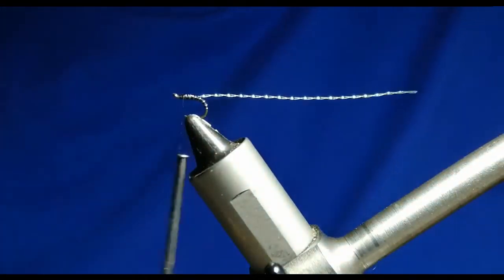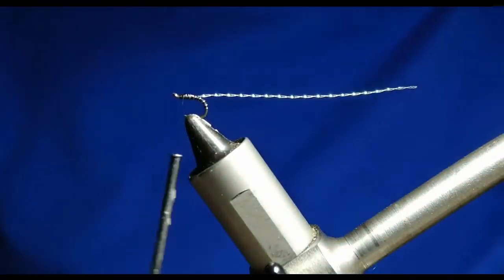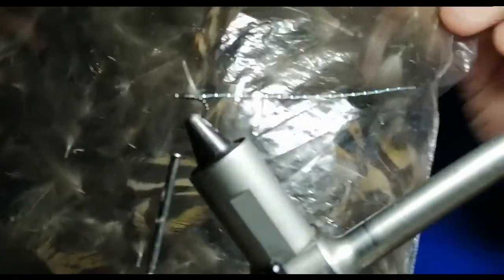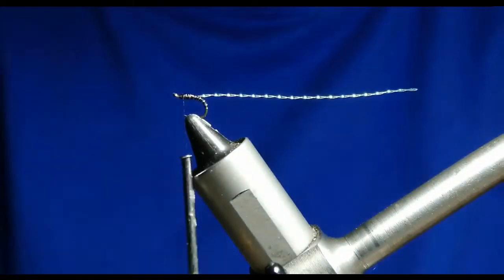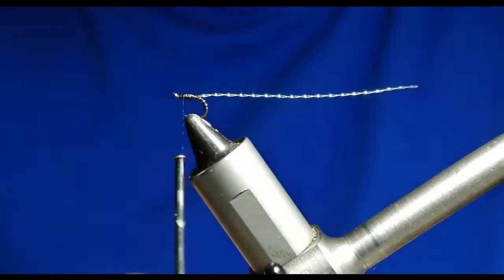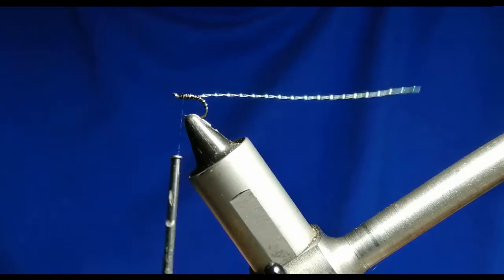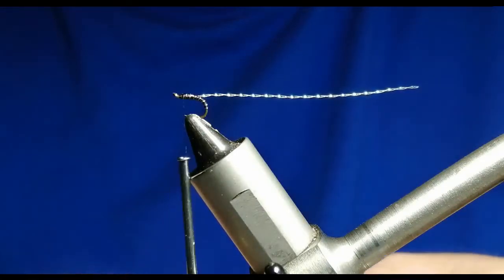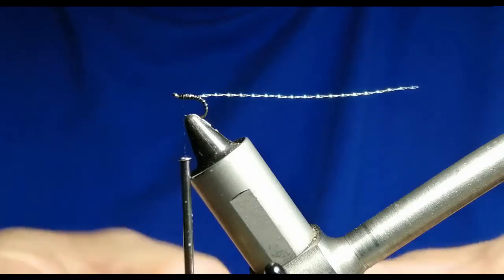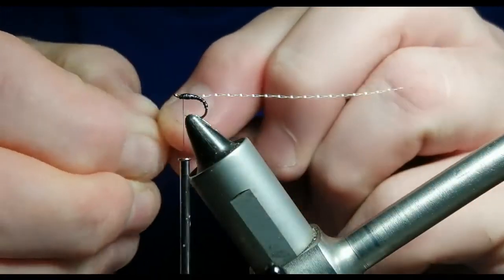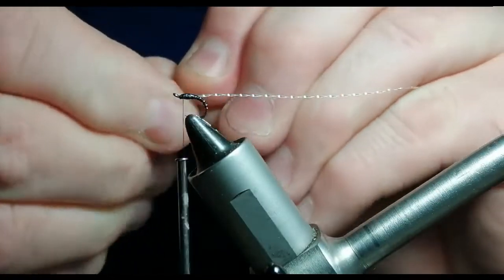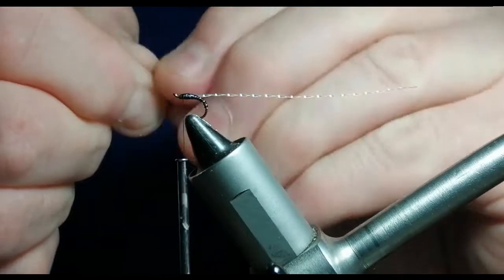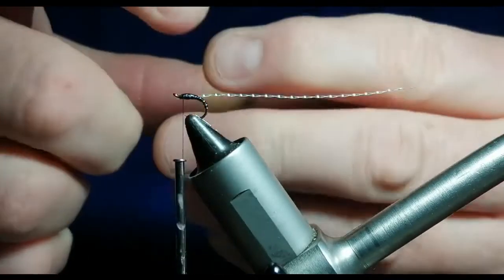Now for the float of the fly, I've got a big bag of natural CDC. So we're going to choose a couple of feathers, line them up, line the tips up, and then once lined up pull it all forward and then transfer it over.